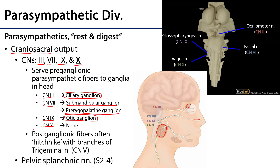Most of the postganglionic fibers of the head interestingly hitchhike on another cranial nerve — the trigeminal nerve, cranial nerve 5. The sacral output of the craniosacral outflow are the pelvic splanchnic nerves, which are branches of the ventral primary rami of sacral nerves S2, S3, and S4. These provide the parasympathetic input to the inferior hypogastric plexuses of the pelvis as well as the parasympathetic innervation to the hindgut.